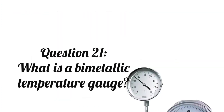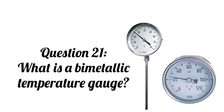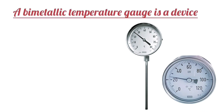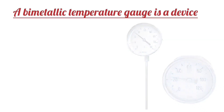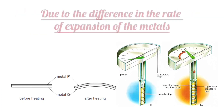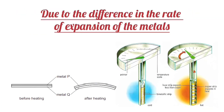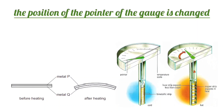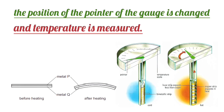Question 21: What is a bimetallic temperature gauge? A bimetallic temperature gauge is a device in which two different metals are used. Due to the difference in the rate of expansion of the metals, the position of the pointer of the gauge changes and temperature is measured.